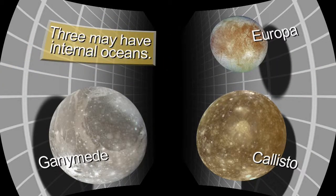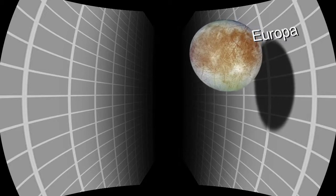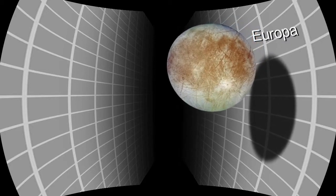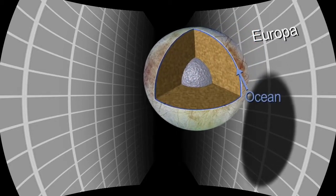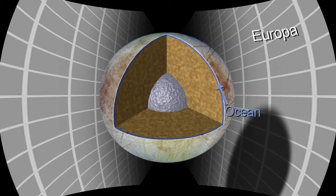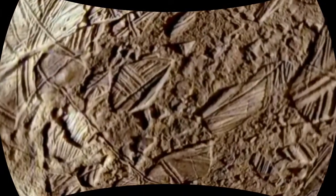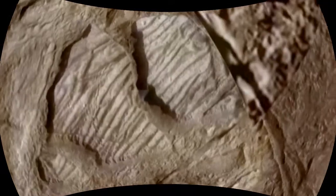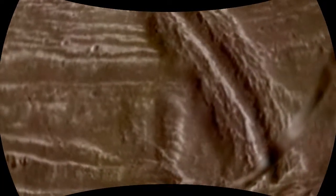The subsurface oceans are certainly the key driver for exploration of these worlds. Europa is a fascinating place with an ocean that might be only tens of kilometers below the surface, and may communicate actively with the surface through eruptions, through icy convection, blobs of warm ice moving up to the surface, through cracking and breaking of the ice. So there could be signs on the surface of what's going on deep down below.